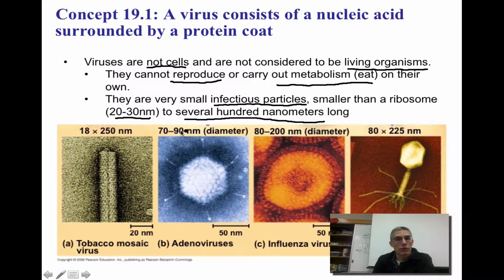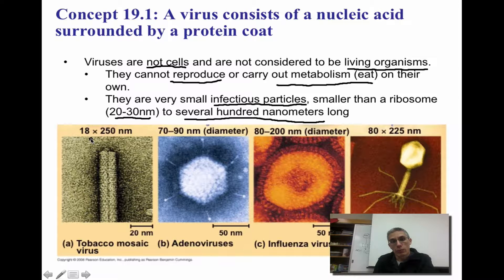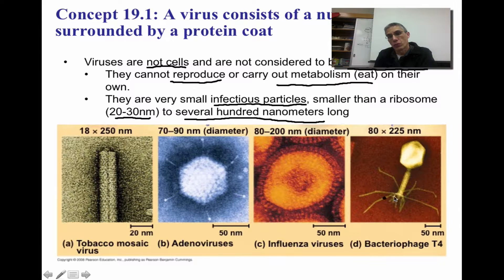Down towards the bottom of the screen are just some examples of different types of viruses. The first thing to notice is they come in a lot of different shapes and sizes. The tobacco mosaic virus is basically around 250 nanometers in length and about 18 nanometers in diameter. An adenovirus is between 70 and 90 nanometers in diameter. The flu virus is between 80 and 200. And the bacteriophage, a T4 virus, is about 225 nanometers in length and about 80 nanometers in diameter — one of the most unique shapes when you look at viruses as a group.